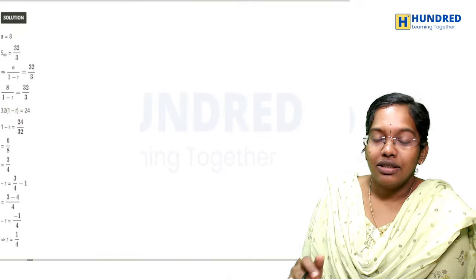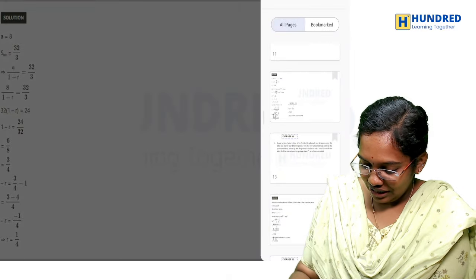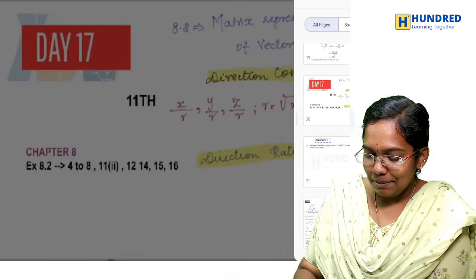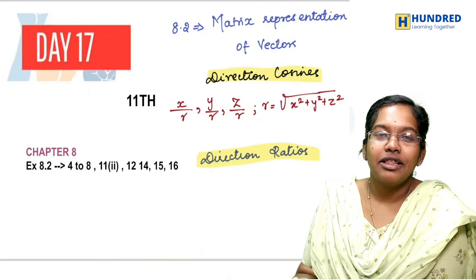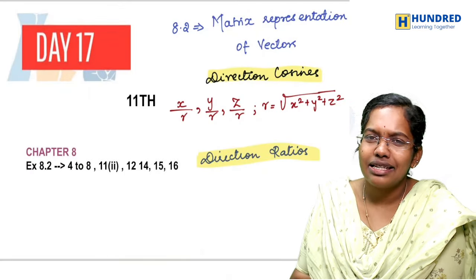After you finish 2.8, there is sequence, AP, GP, sum of N terms. This is a special series.